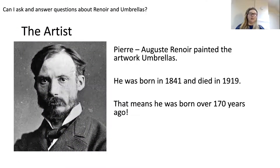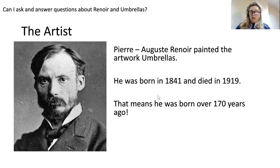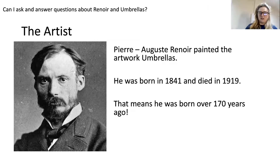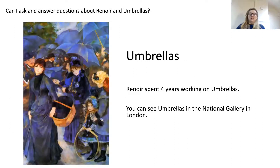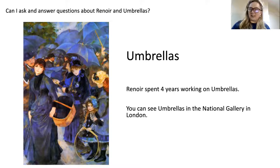Now, this man here is Renoir. This is the artist who painted that painting. His full name is Pierre-Auguste Renoir. He was born in 1841, and he died in 1919. That means he was born over 170 years ago — can you believe it? He spent four whole years working on this painting. And if you wanted to see this painting in real life, you could go to the National Gallery in London and that is where you would find it.